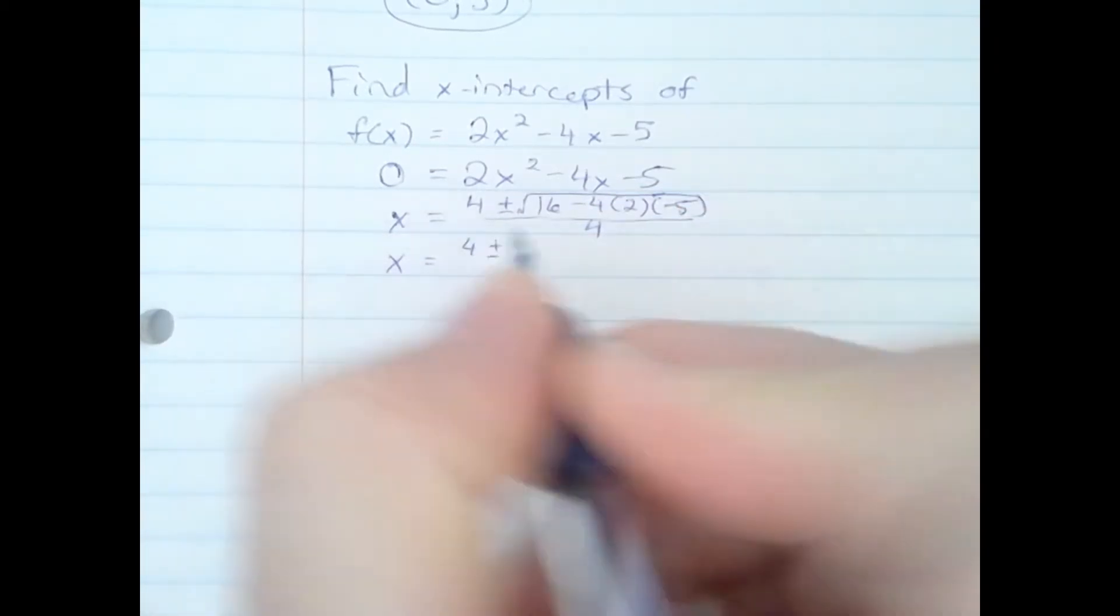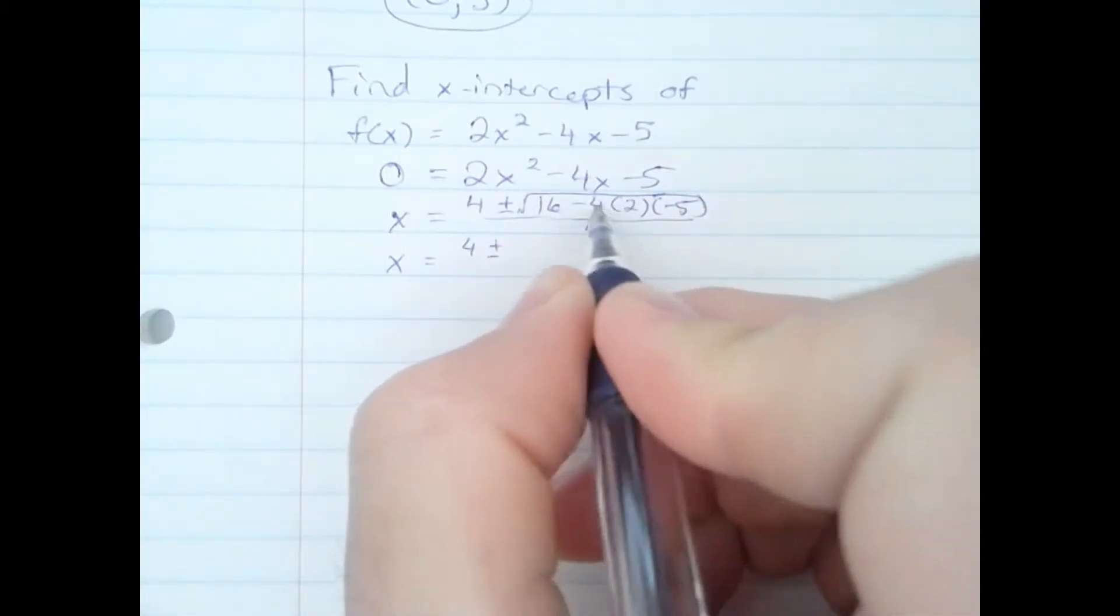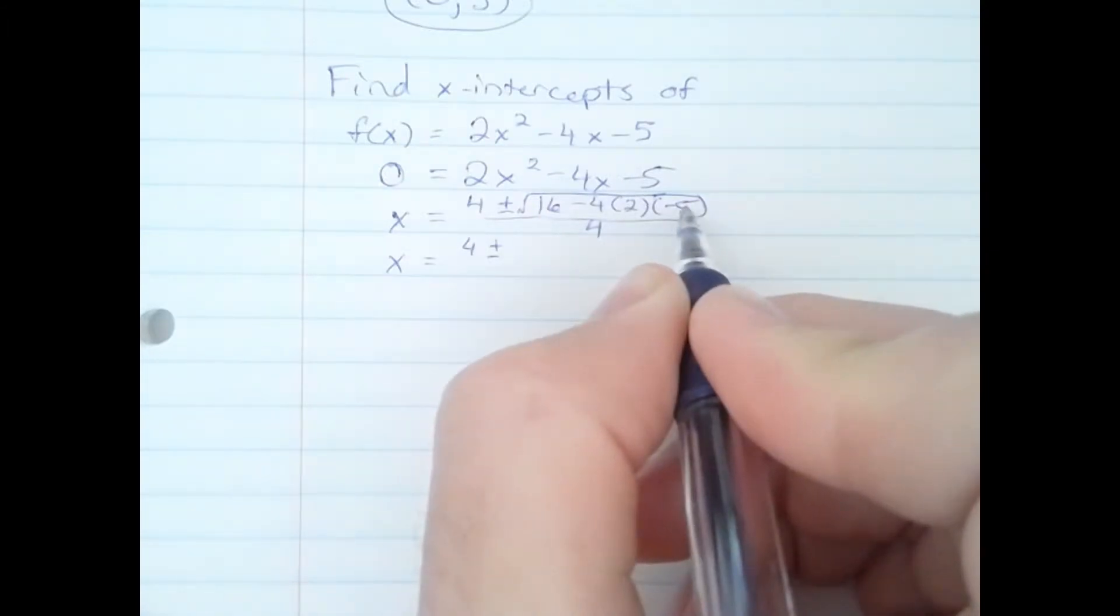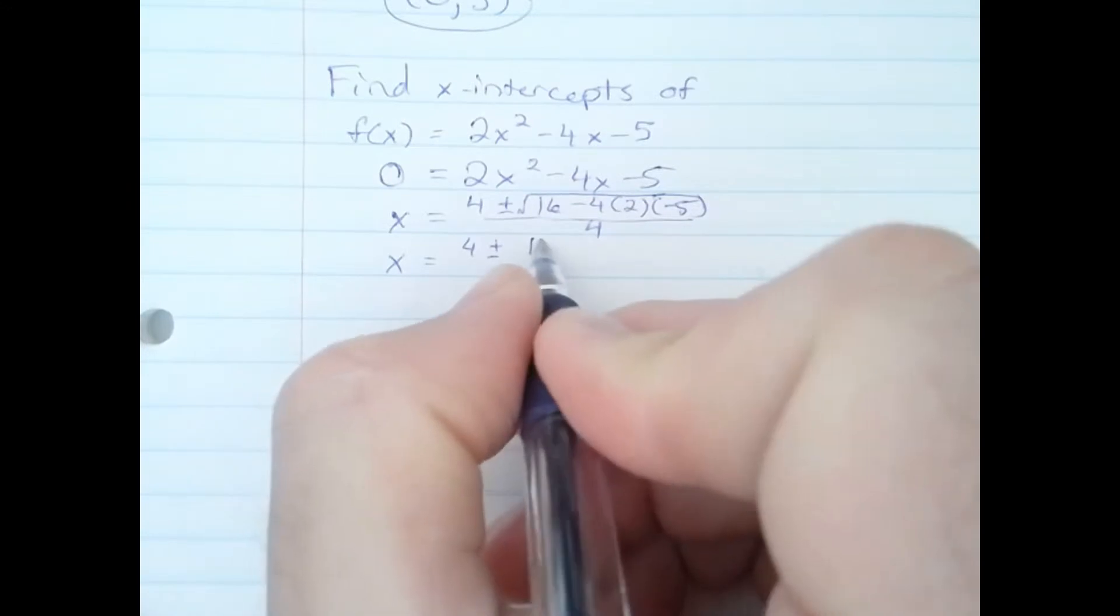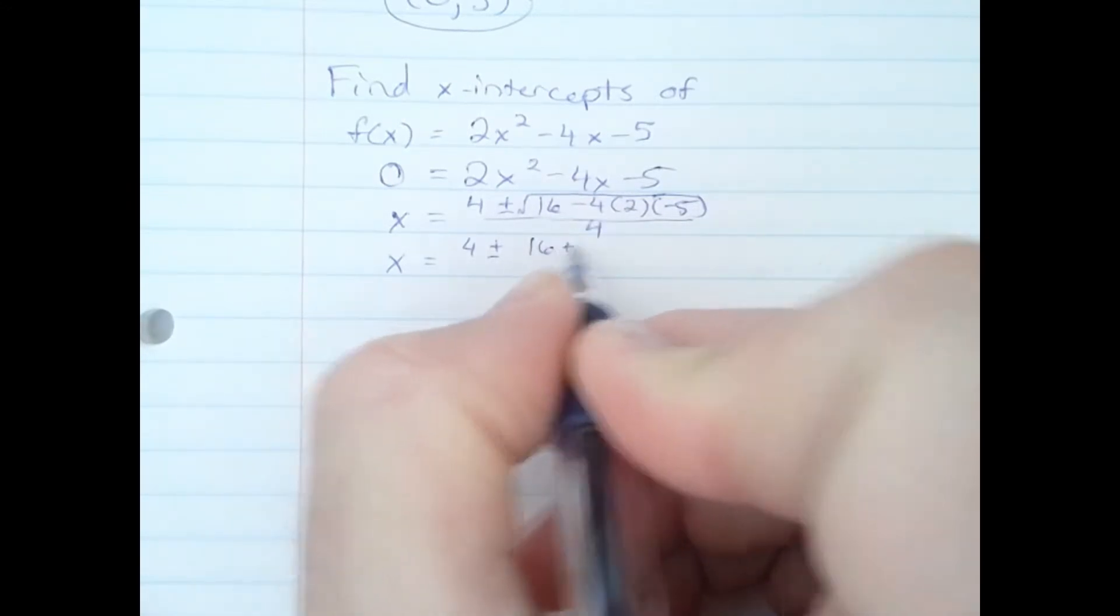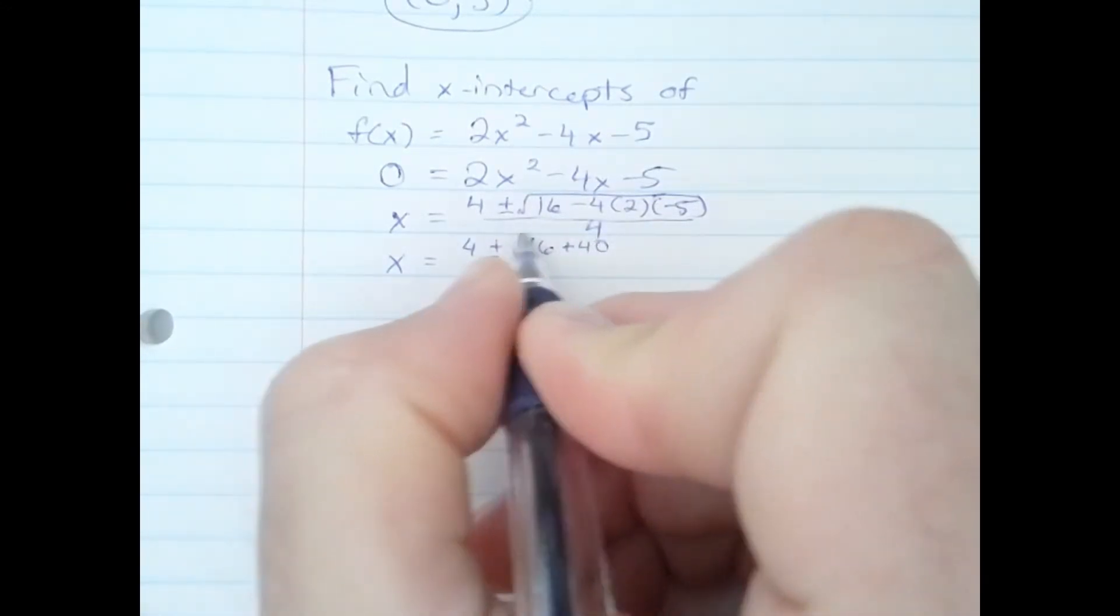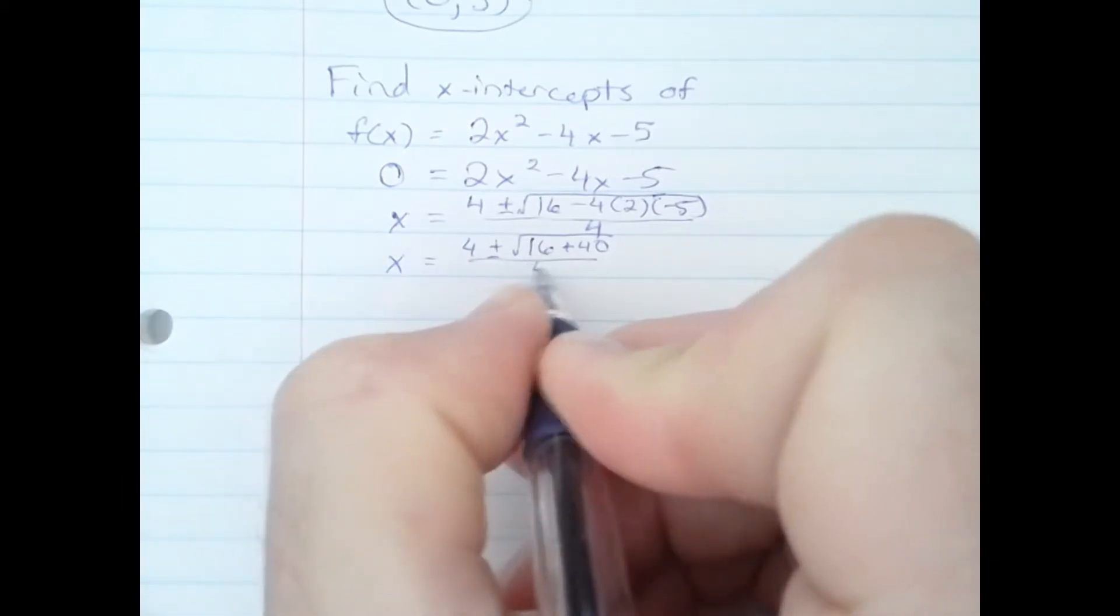4 plus or minus... 4 times 2 times 5, is negative 5, is a negative 40. So I have 16 minus a negative 40, is really 16 plus 40. Still over 4.